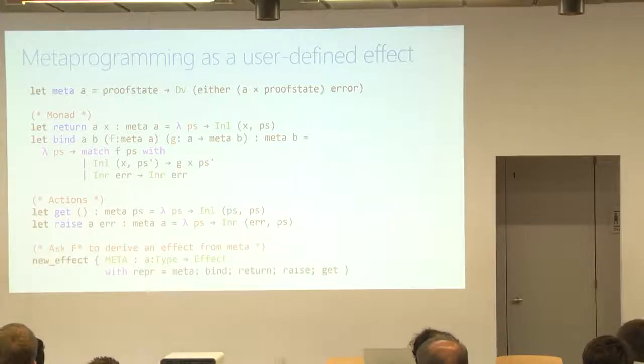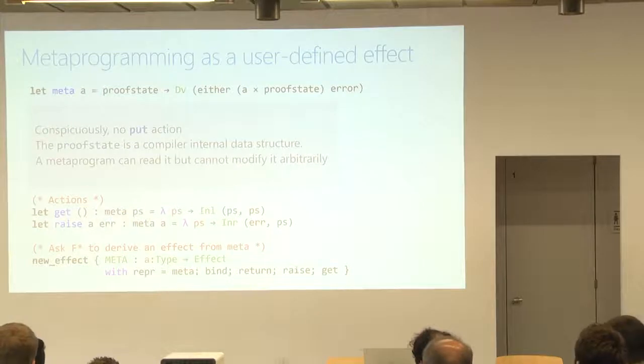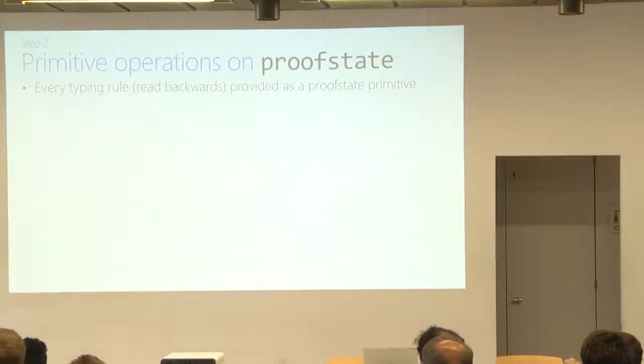Now, one thing to point out, so that's going to turn it into an effect. Now, meta programs have two actions that I've shown you here, among others, but the actions are to get the current state and to raise an exception. But notice that despite this being a state monad, I've conspicuously omitted the put action. Put lets you just change the proof state with some other proof state. And the proof state is a trusted internal compiler data structure that represents your partially completed proof. You shouldn't be able to just blow it away and replace it with another proof. So, the only things you can do to the proof state are interact with it through a few trusted primitives that the compiler provides you. Where each such primitive can be read as a typing rule read backwards.